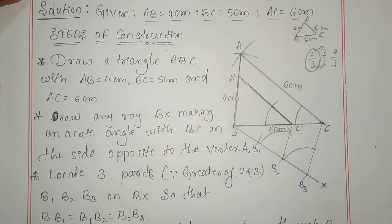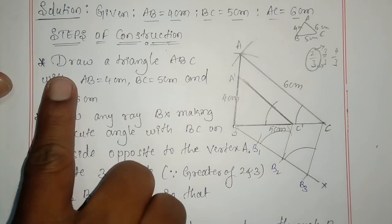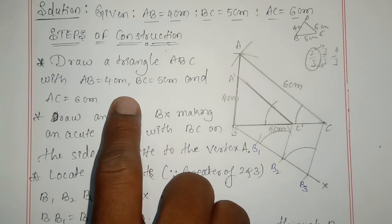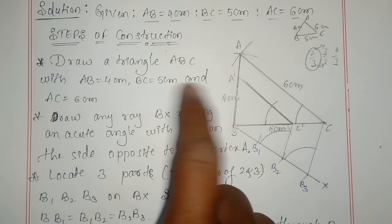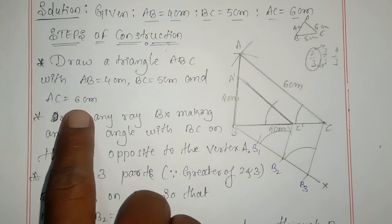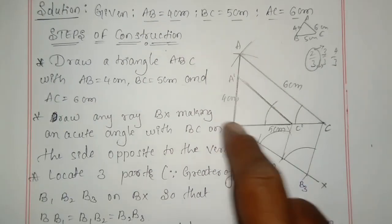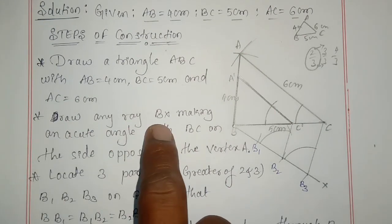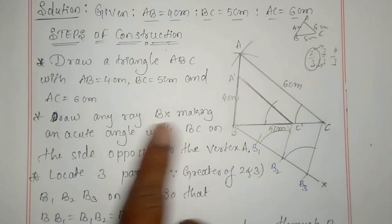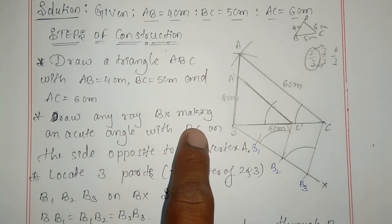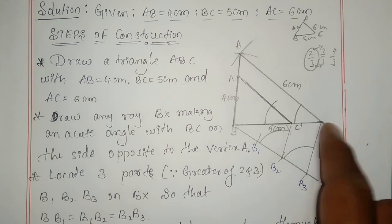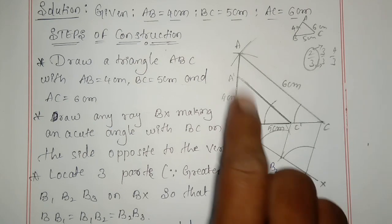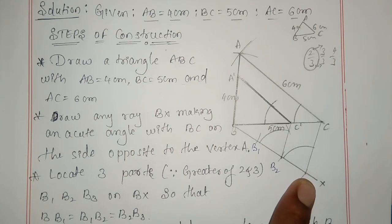Steps of construction: Step one — draw triangle ABC with AB equals four centimeter, BC equals five centimeter, and AC equals six centimeter. Step two — draw a ray BX making an acute angle with BC, on the side opposite to the vertex A.